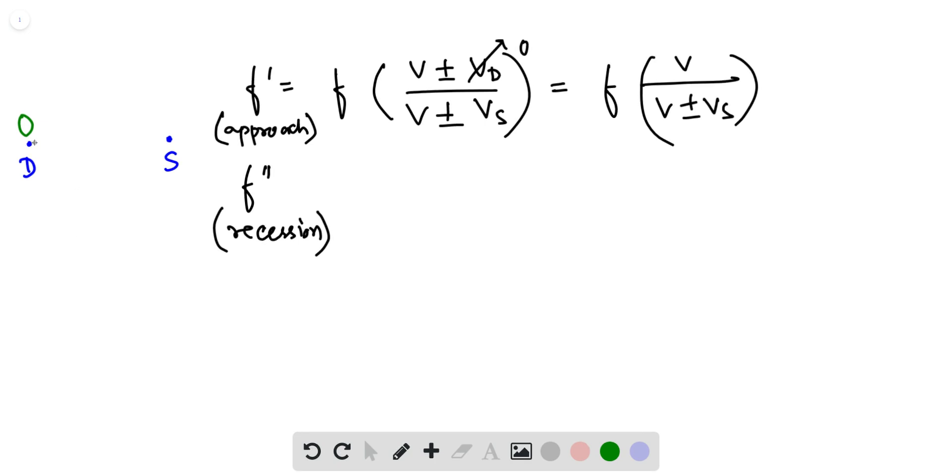We are calculating everything with respect to the observer because this is us. Now since the wave is going towards the detector on the first case, like when for the approach.